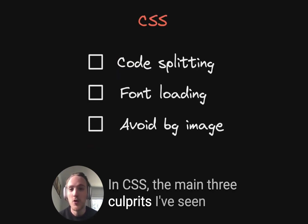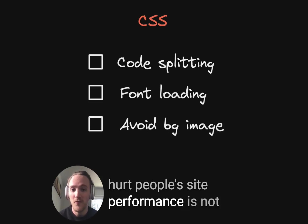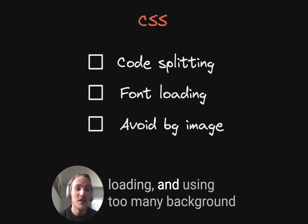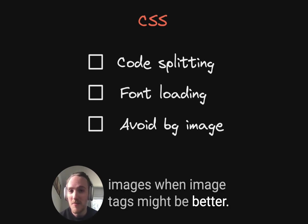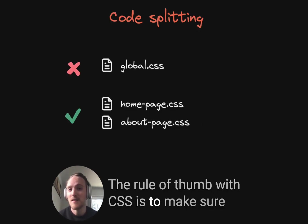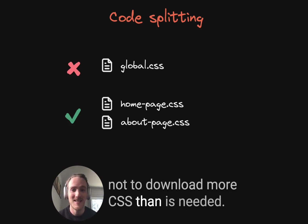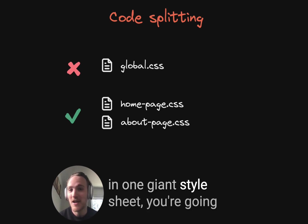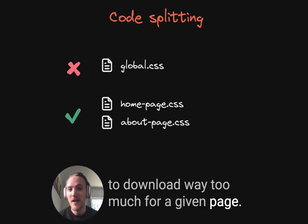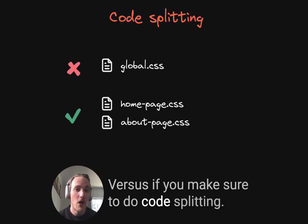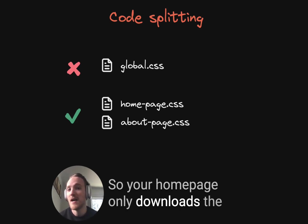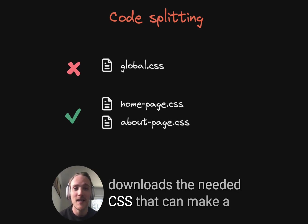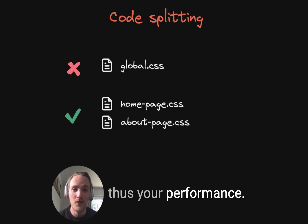In CSS, the main three culprits I've seen hurt people's site performance are: not using code splitting, not optimizing font loading, and using too many background images when image tags might be better. The rule of thumb with CSS is to make sure not to download more CSS than is needed. So if you have your entire website styles in one giant stylesheet, you're going to download way too much for a given page. If you do code splitting so your homepage only downloads the homepage CSS and any other page only downloads the needed CSS, that can make a big difference in performance.